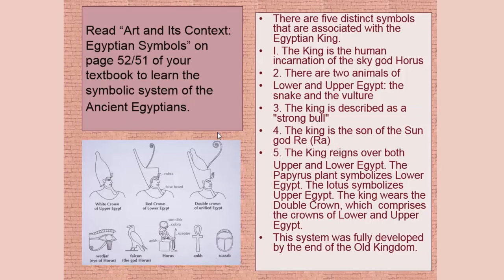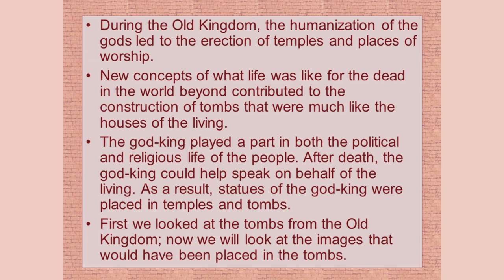Here are some symbols of the Egyptian king, because we're about to look at a Ka statue. We've already seen some of these when we looked at the Palette of Narmer and the crown of Upper and Lower Egypt. Here's a seated king with the sun disk and the cobra, holding a scepter. Here's the falcon, which is the image of the god Horus. The king is the son of the sun god Ra and rules over both Upper and Lower Egypt — a system fully developed by the end of the Old Kingdom.